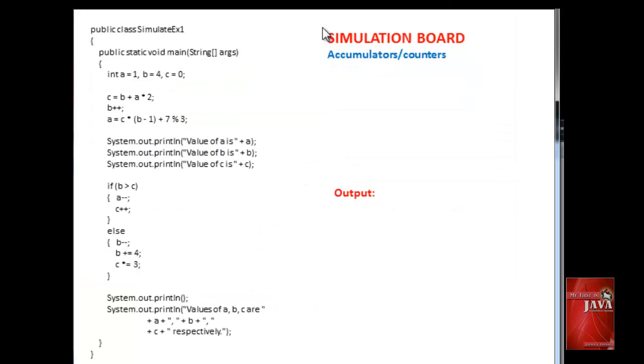Let us discuss our program. As we declare integer variables a, b, and c, we assign its initial value with 1, 4, and 0 respectively.